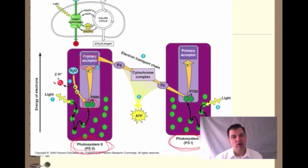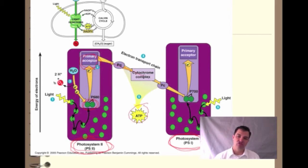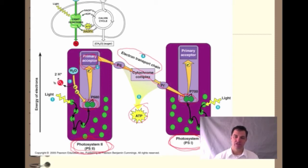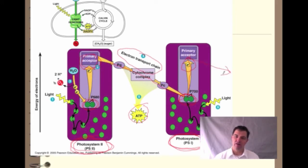Then we're going to transfer that energy from protein to protein to protein, and as we do that we're going to give off a little bit of ATP. This is also an electron transport chain. The final electron acceptor in that chain will be photosystem I. So we transfer the energy to photosystem I. Photosystem I loses its electrons by doing a similar reaction as light hits it and transfers the energy, and that electron is going to be used to power another set of reactions.